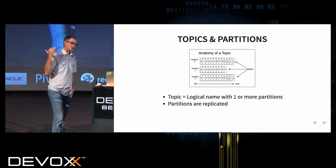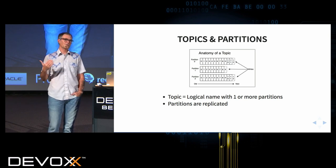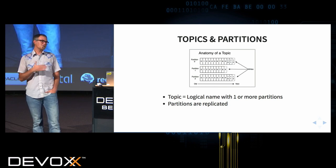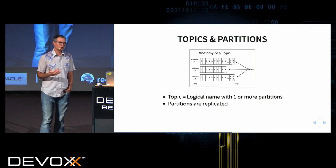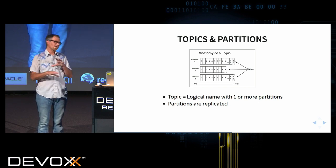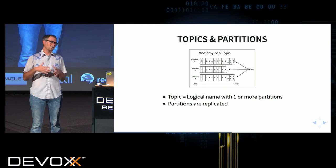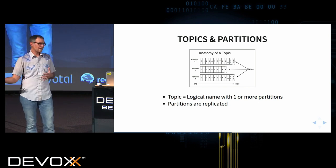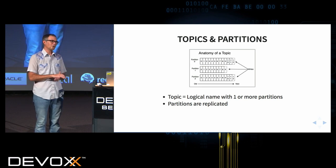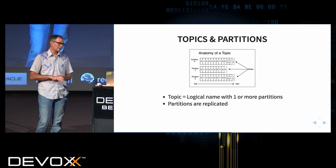Kafka manages all of this partitioning of messages across the cluster and the replication of those records for you. The nice thing about Kafka is that it really hides the details of the distributed system — the leader-follower stuff, the election when a node goes down — all abstracted from you. You just have a really simple interface for working with it.